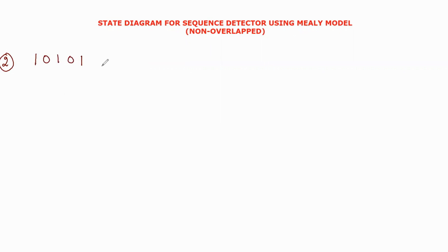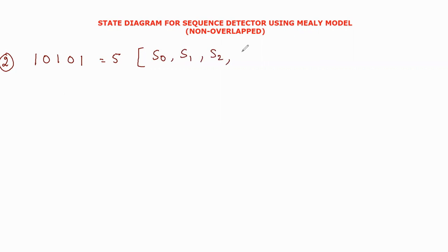Now let me show the second example: detecting the sequence 10101. The total number of bits is 5, so we need 5 states: S0, S1, S2, S3, and S4.